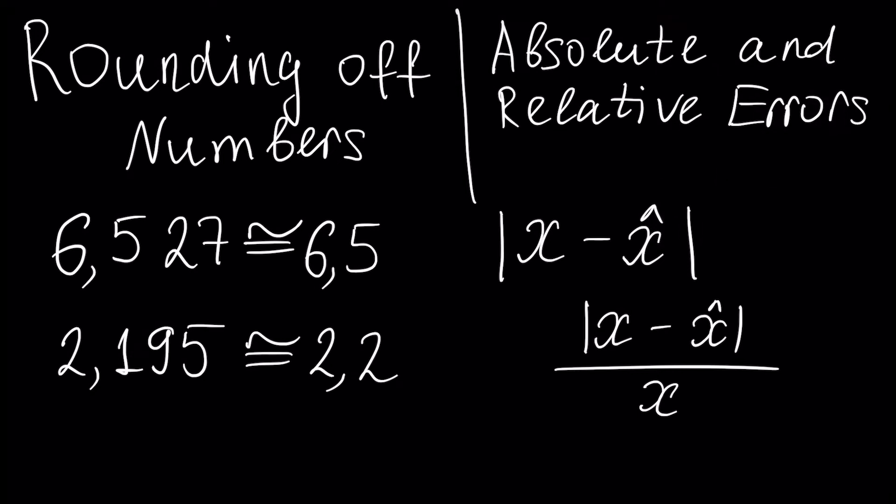In this tutorial we will learn rounding off numbers and absolute and relative errors. At the end of this tutorial you will be able to understand how rounding off is done and what is absolute and relative error. In approximate calculations it's frequently necessary to round off numbers, which means dropping one or more last digits. To ensure that the rounded number is as close as possible to the original number, we have several rules, and I will show you these rules by giving examples.